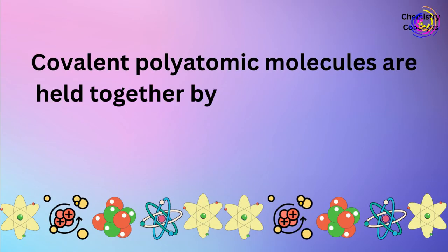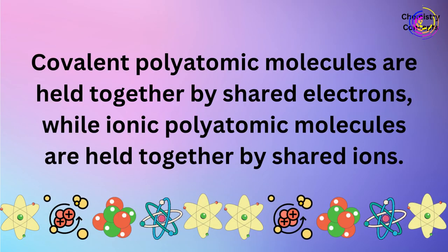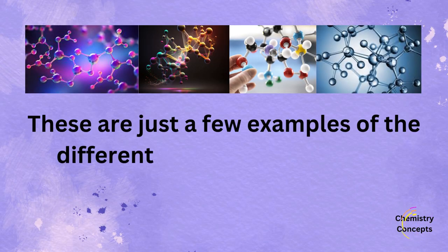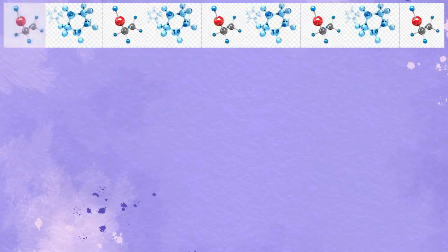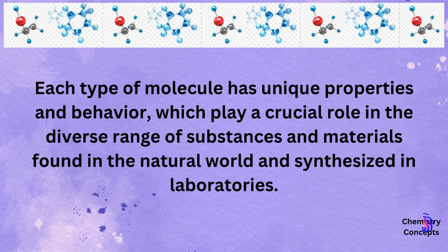Covalent polyatomic molecules are held together by shared electrons, while ionic polyatomic molecules are held together by shared ions. These are just a few examples of the different types of molecules in chemistry. Each type of molecule has unique properties and behavior, which play a crucial role in the diverse range of substances and materials found in the natural world and synthesized in laboratories.